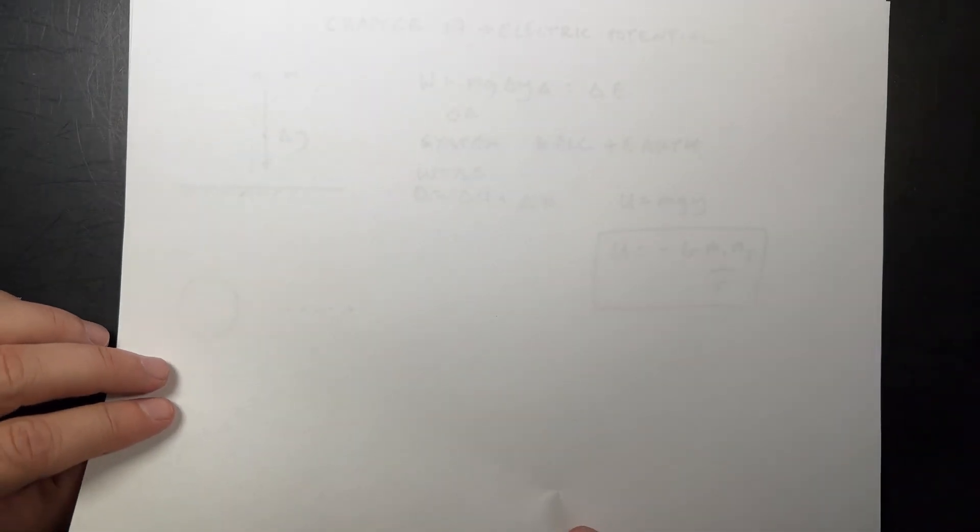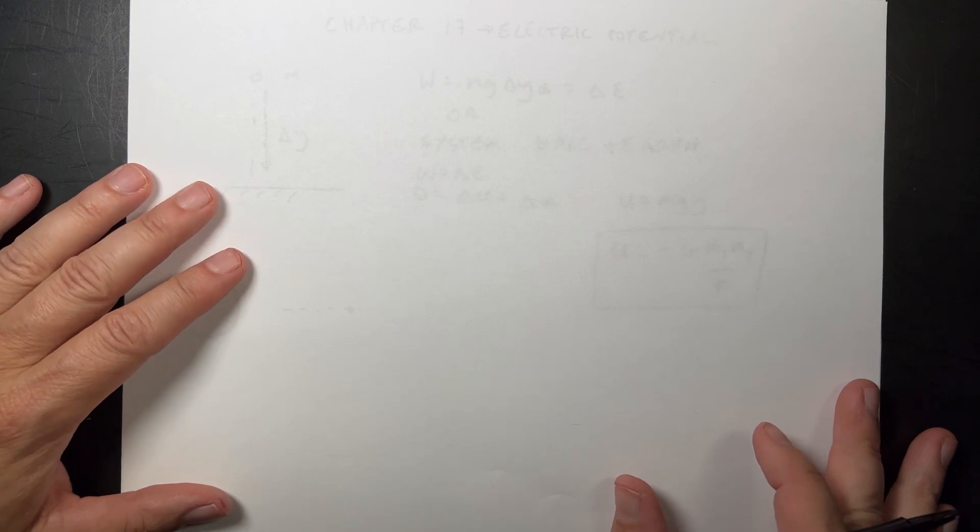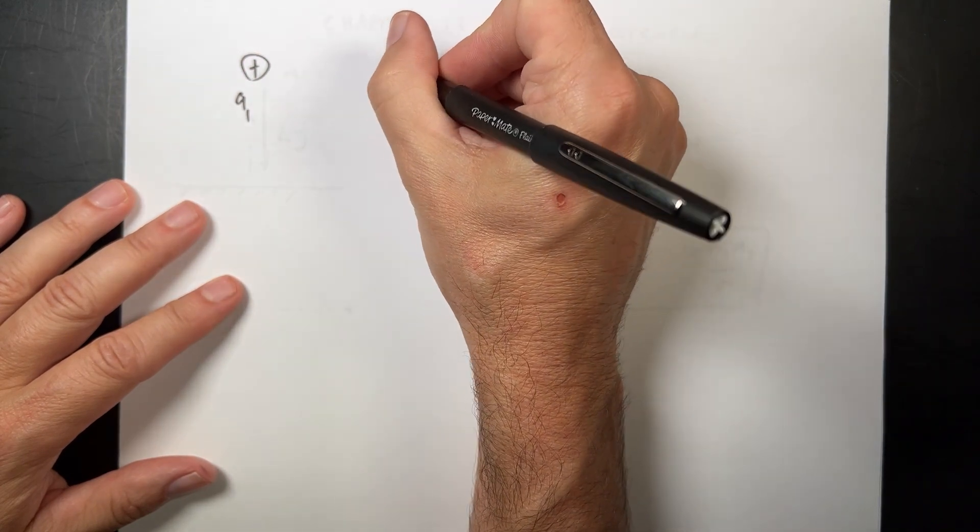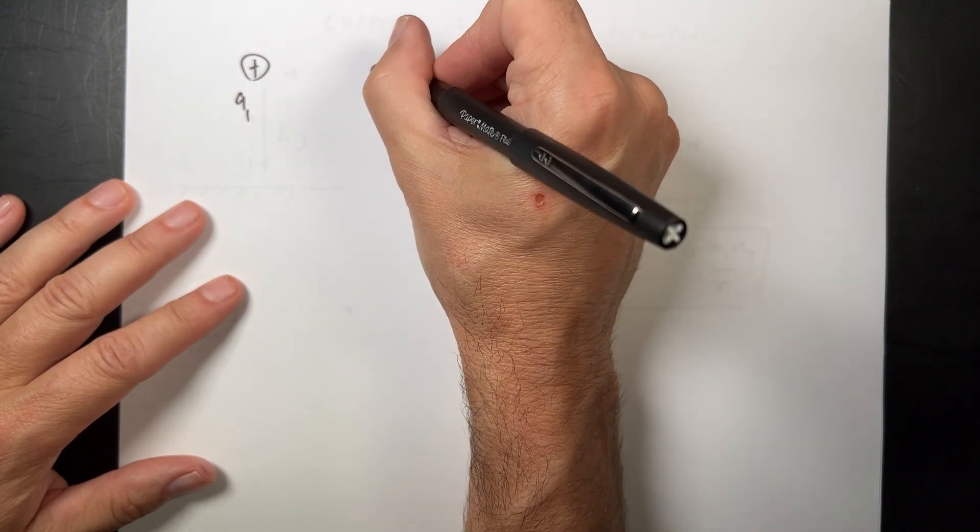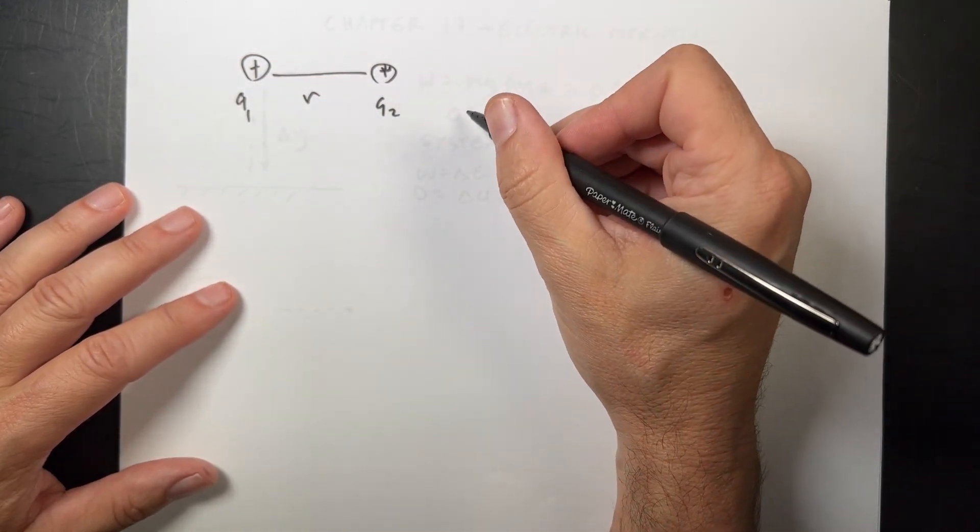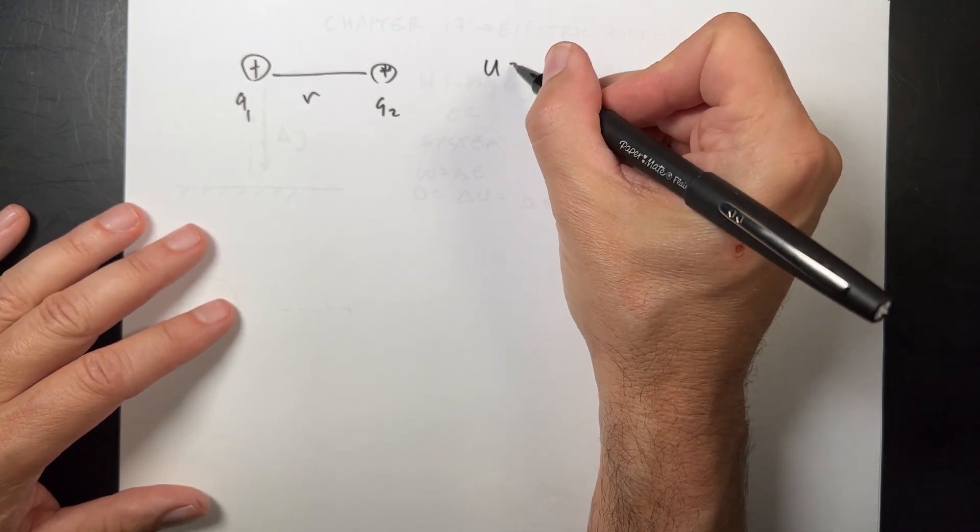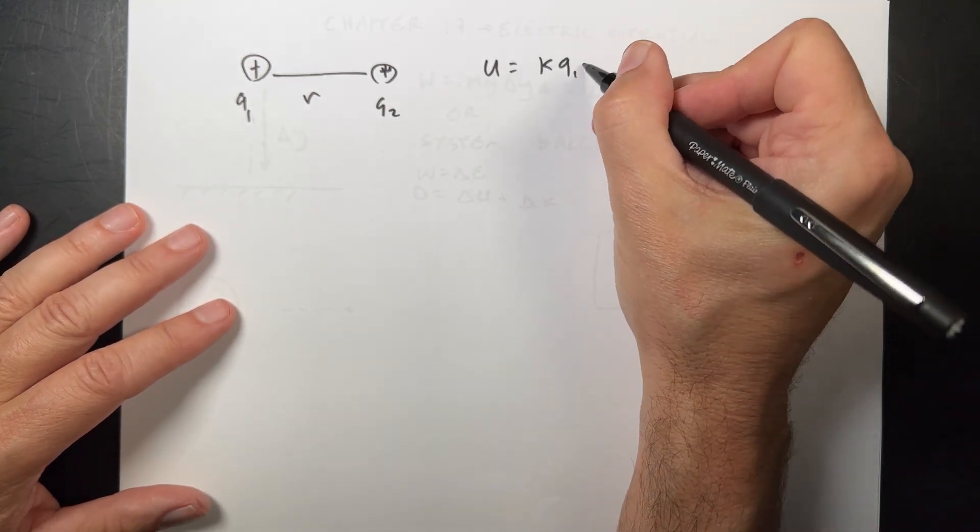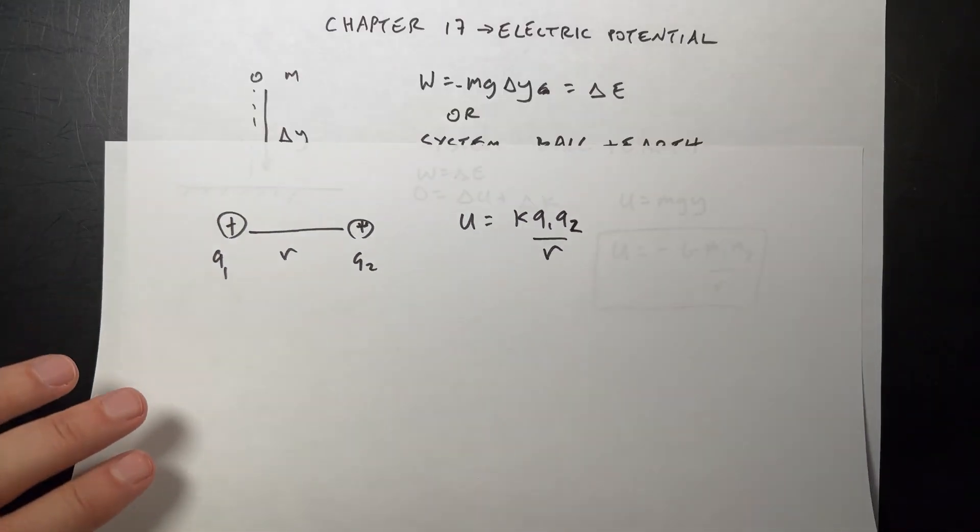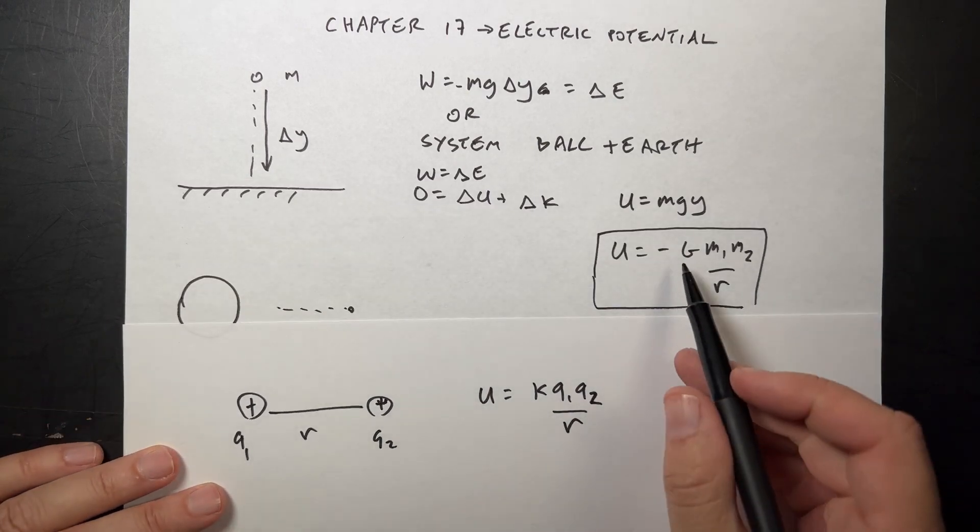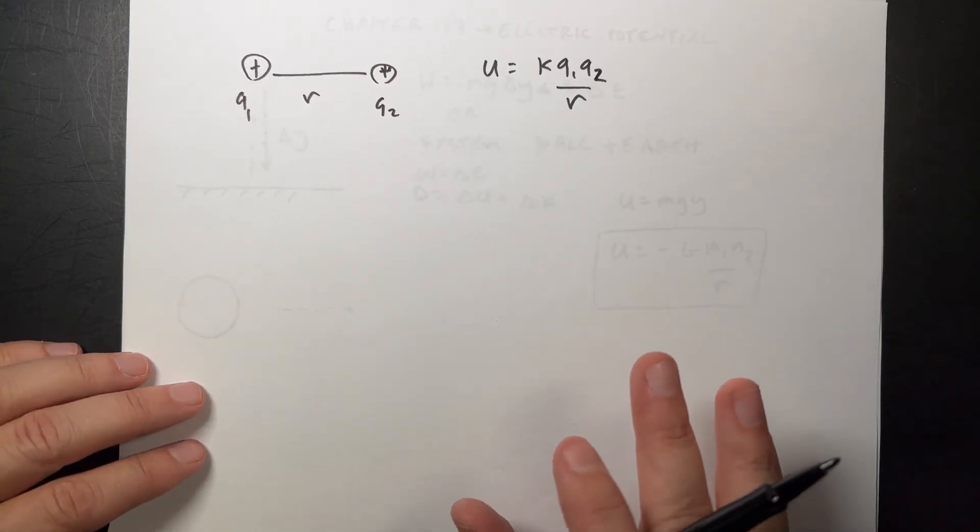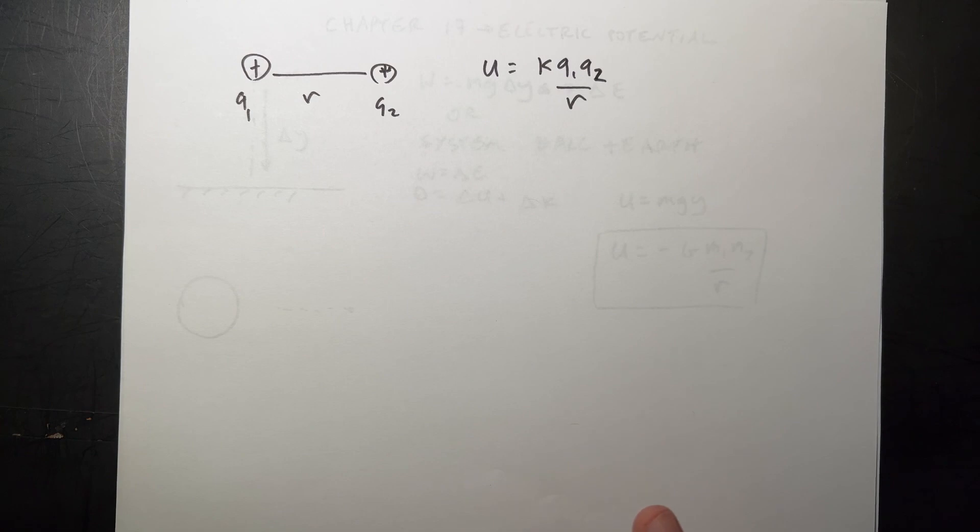It turns out that we can do the same thing with electric fields and electric forces. If I have a charge q1 and a charge q2, separated by a distance r, then I can define this as a potential u as k q1 q2 over r. Notice the big difference here. The minus sign. There's no minus sign here. Because gravitational force, gravitational fields look like electric force, electric fields. But there's a very big difference.